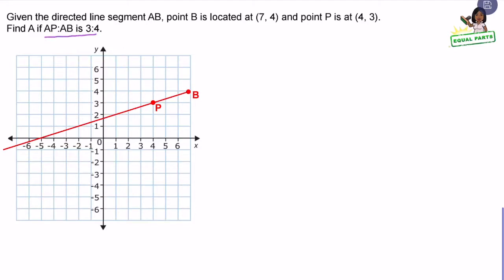I'm going to translate AP to AB to AP to PB. That means from A to P, there are three parts and from P to B, there is one part. So we have a three to one ratio.